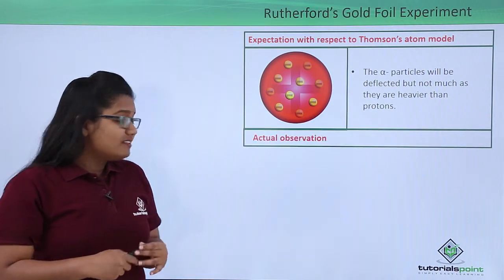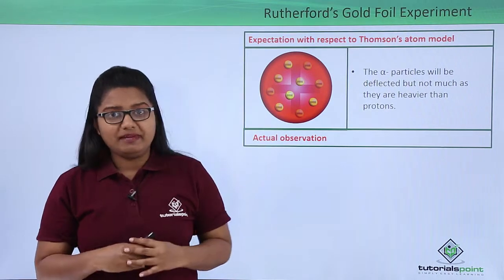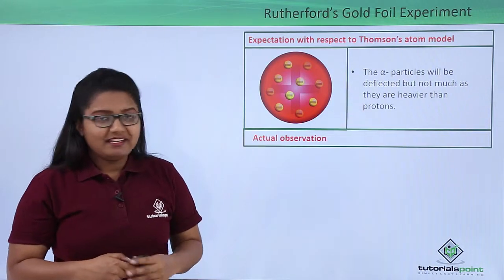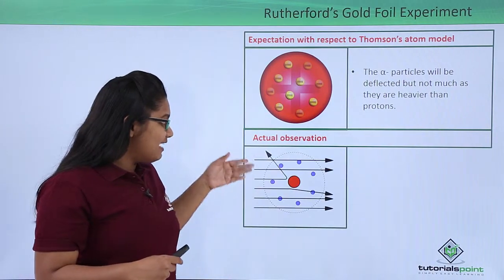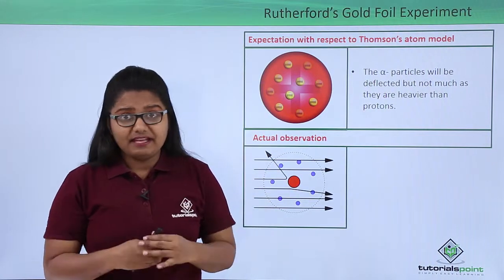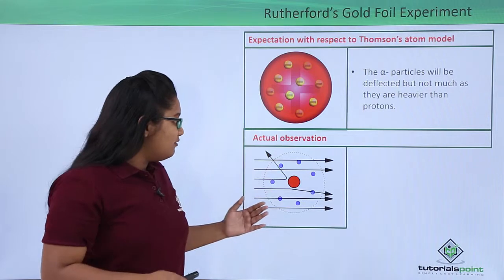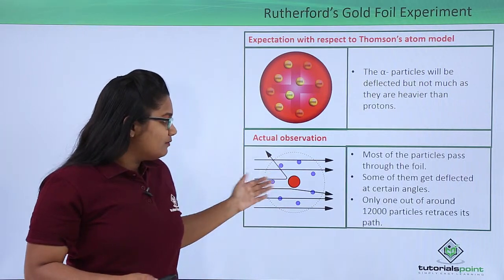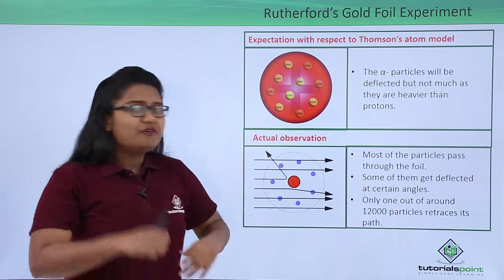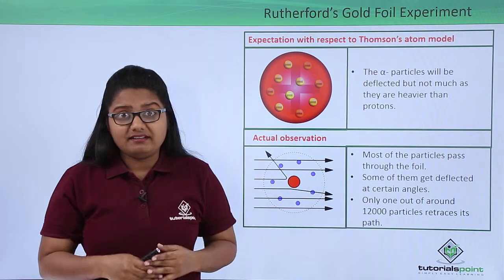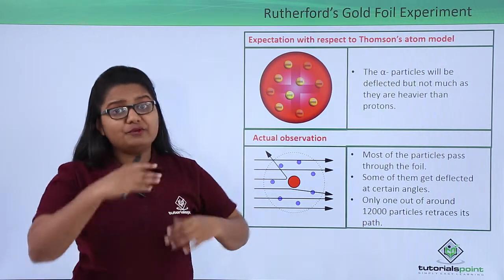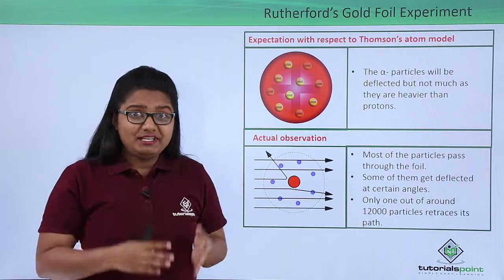The actual observation after the experiment was totally different from what he expected. Almost all the alpha particles passed right through the foil without any deflection. A few alpha particles deflected at certain angles. A very small group seemed to retrace their path—around one particle out of 12,000 alpha particles showed this behavior.